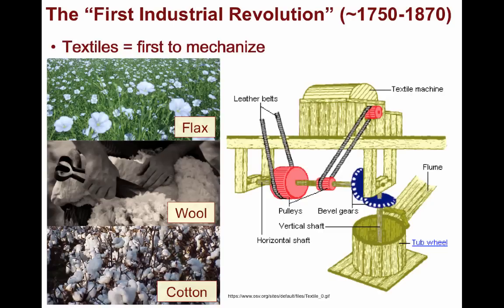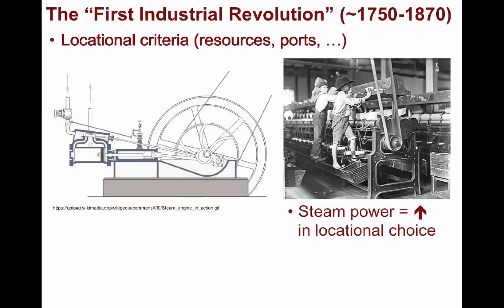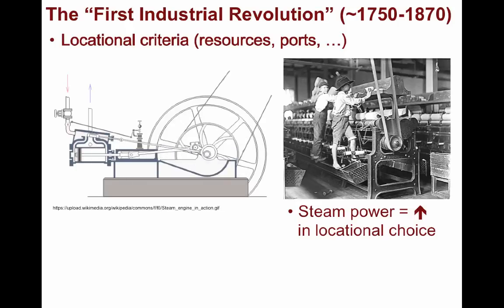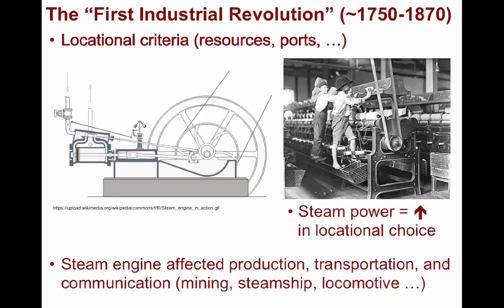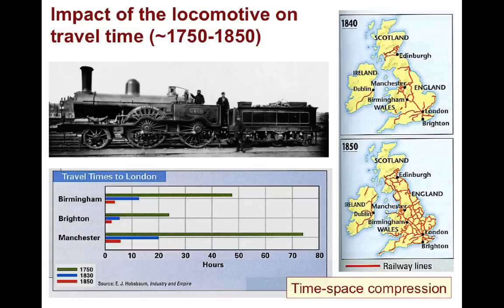As stated earlier, locational criteria for industrializing include considerations such as proximity to energy sources and raw materials. Since the earliest factories were powered through water wheels, they had to be adjacent to rivers. However, this changed with improvements in technology. The steam engine enabled manufacturers greater choice in where they could locate their factories. It affected production, transportation, and communication. The steam engine had a plethora of uses, such as pumping water from coal mines, as well as powering steamships and locomotives. As you can see in this chart, the impact of distance decay was reduced as tracks were laid down and as the speeds of trains increased.